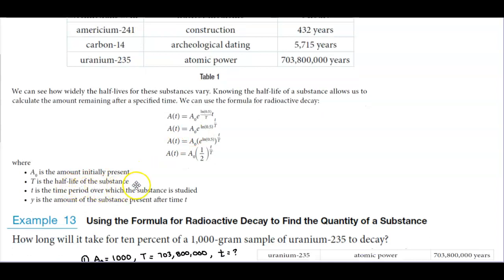T is the half-life of the substance, which would be from this third column. Lowercase t is the time period over which the substance is studied. And then y is the amount of substance present after time t.